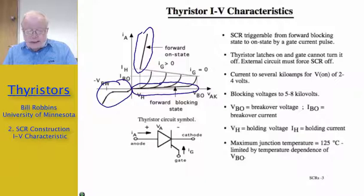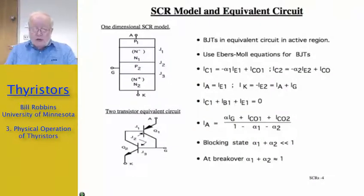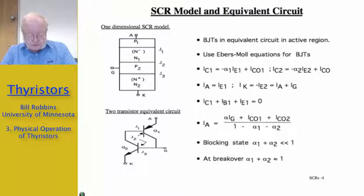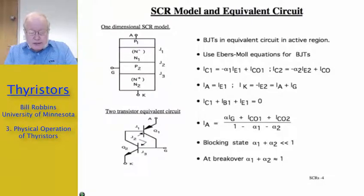In order to explain the operation of the device, the next slide shows a so-called four-layer model for a thyristor. This is a one-dimensional model. Starting from the anode, we have the P1 layer, N1, P2, and N2. The cathode is connected to the bottom of this stack, and the gate is connected to the P2 layer. I've designated the three PN junctions J1, J2, and J3. Corresponding to that is a two-transistor equivalent circuit for this four-layer stack. The upper transistor Q1 is a PNP transistor, whose emitter is the P1 layer, whose base is the N1 layer, and whose collector is the P2 layer. The lower transistor Q2 is an NPN transistor, whose collector is the N1 layer, whose base is the P2 layer, and whose emitter is the N2 layer.